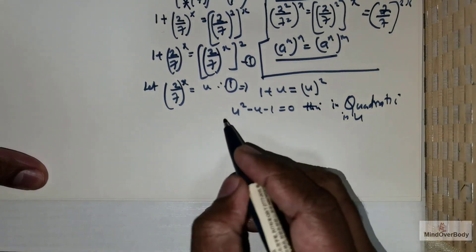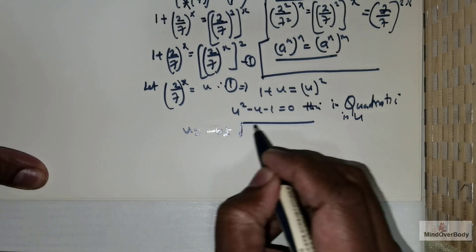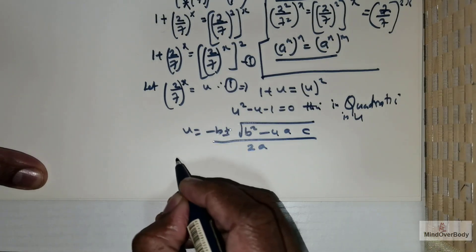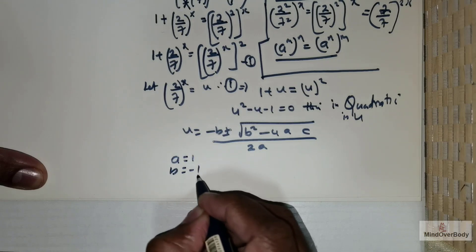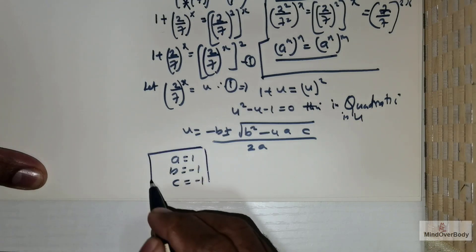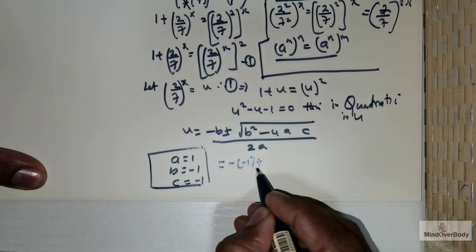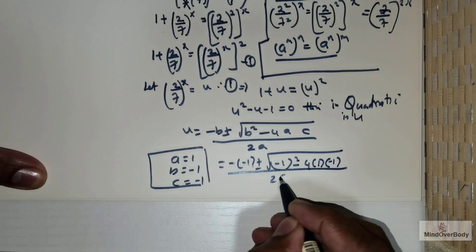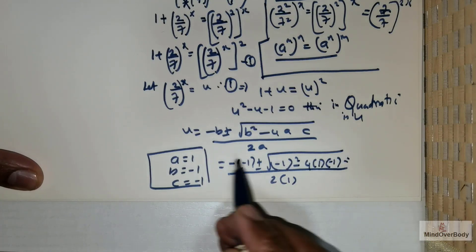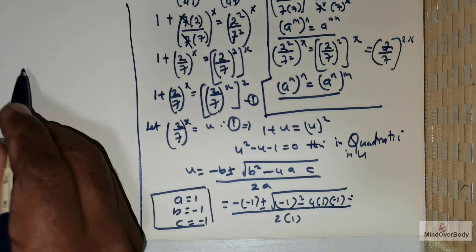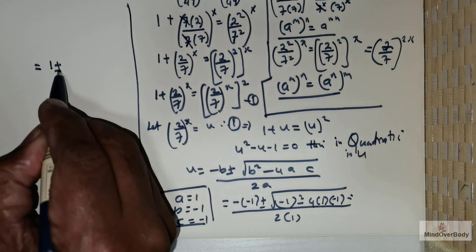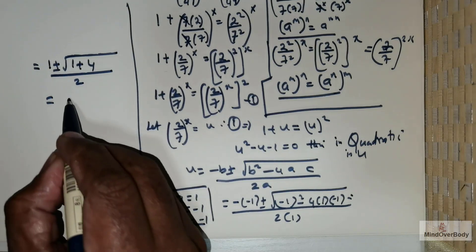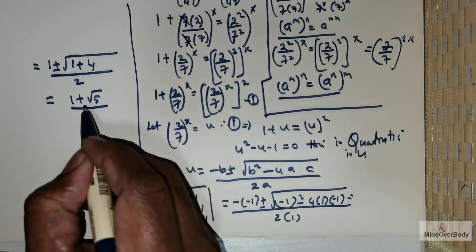We use the quadratic formula: negative b plus or minus root of b squared minus 4ac, divided by 2a, where a equals 1, b equals negative 1, and c equals negative 1. Substituting: negative of negative 1, plus or minus root of 1 minus 4 times 1 times negative 1, divided by 2. This gives 1 plus or minus root of 5, divided by 2.